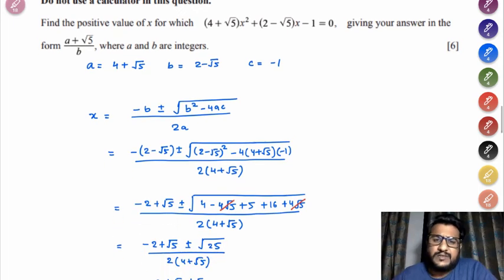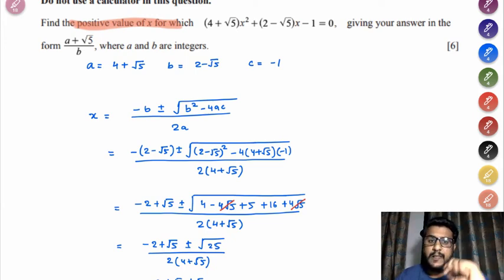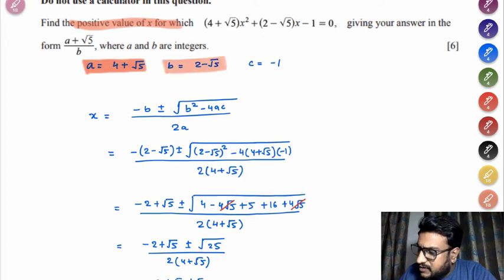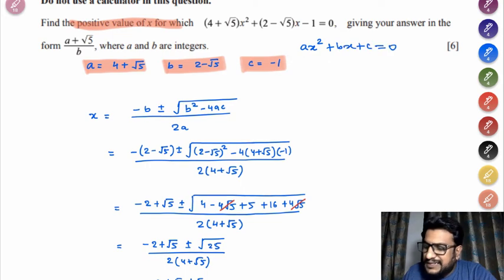Again, don't use calculator. Generally this is mentioned in the paper in surd questions especially. Don't use calculator. Now over here the key term is find the positive value of X. Means we know when we are solving quadratic equation there are two possible values of X. So over here they are asking you only you need to find the positive values of X. Now this is an equation given in standard form so I can easily write down my A, B and C because in standard form our equation is AX² plus BX plus C equals to 0. Now comparing this equation with the standard form I can easily figure out the values of A, B, and C.